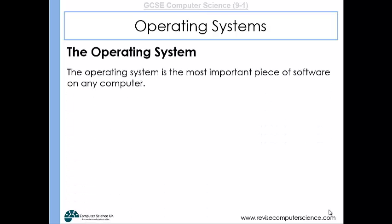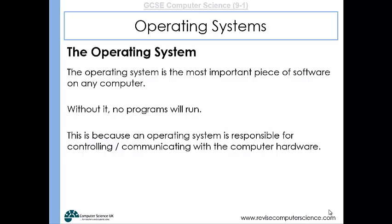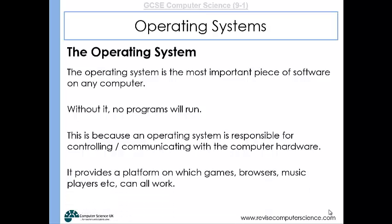The operating system is the most important piece of software on any computer. If you don't have an operating system, you won't be able to interact with the computer. No programs will be able to run. An operating system is responsible for controlling and communicating with the computer hardware. It provides a platform on which any programs or applications can work.